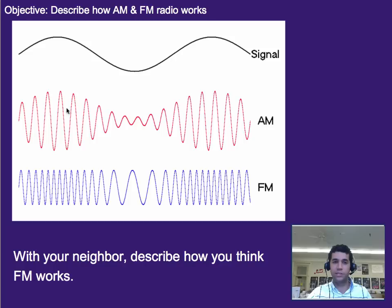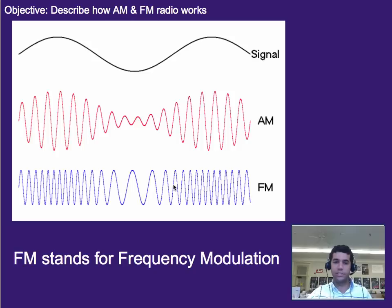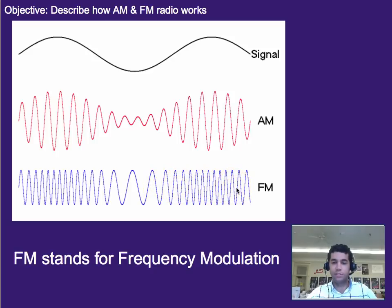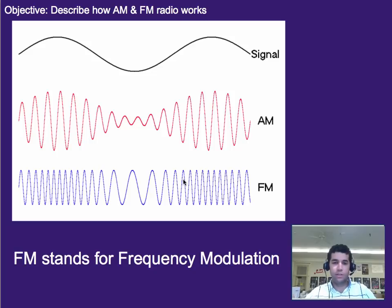If AM is amplitude modulation and we can see the amplitude of the wave is changing, then FM stands for frequency modulation — and we can actually see that the frequency of this wave is changing. Instead of encoding the signal in the amplitude, we change the frequency of the wave to represent what's happening to the signal. This means you need a wider band of frequencies, so it takes up more space in the spectrum. FM radio sends the signal by changing the frequency; AM radio sends the signal by changing the amplitude.